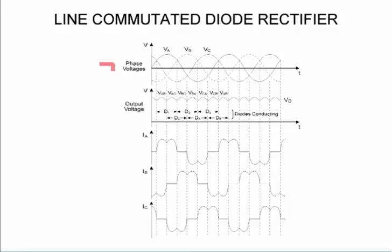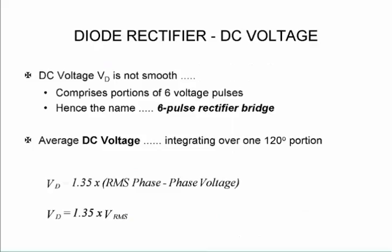So here is the phase voltage, the output voltages, and the different phase current components which then makes up that DC current. So the DC voltage is not smooth, it's portions of the six voltage pulses and that's why we call it a six pulse rectifier bridge.